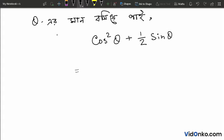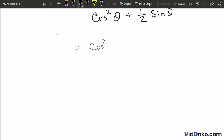So we evaluate cos square 30 degree plus half into sine 30 degree. Cos 30 is root 3 by 2.